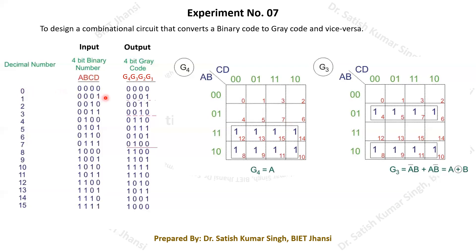In gray code, whenever we move to the next number, only one bit changes. In binary, when moving from 0001 to 0010, two bits change: one goes from 1 to 0 and another from 0 to 1. When moving from 0011 to 0100 — decimal 3 to 4 — three bits change. But in gray code, moving from one code to the next always involves only one bit change.